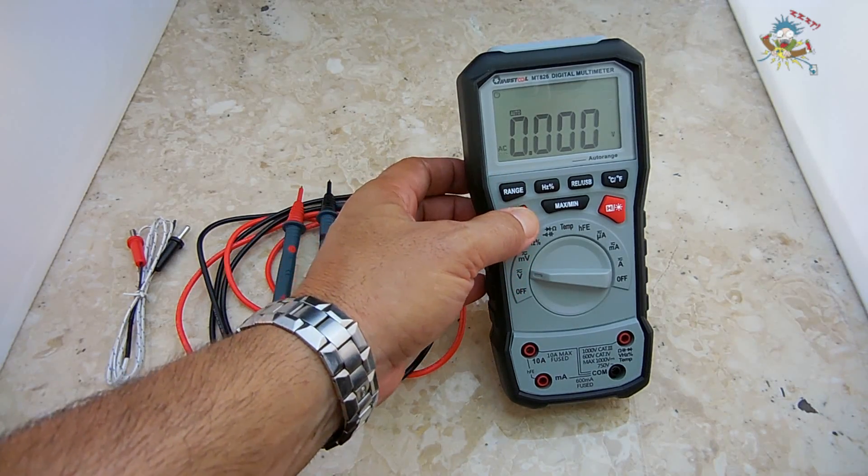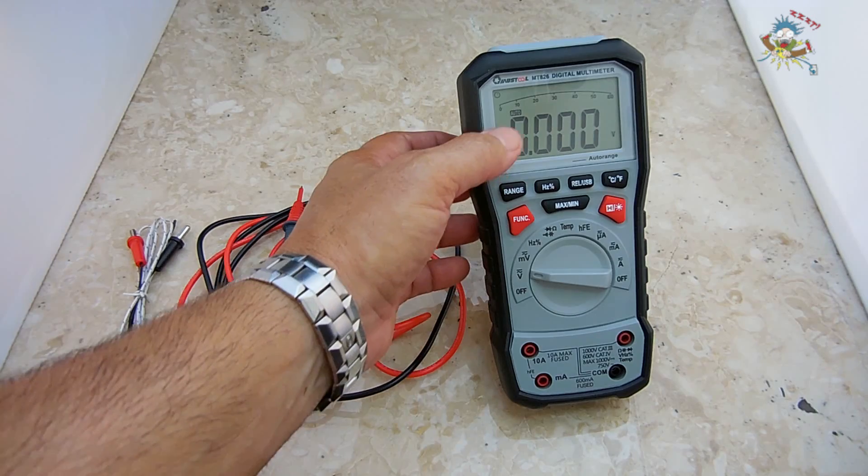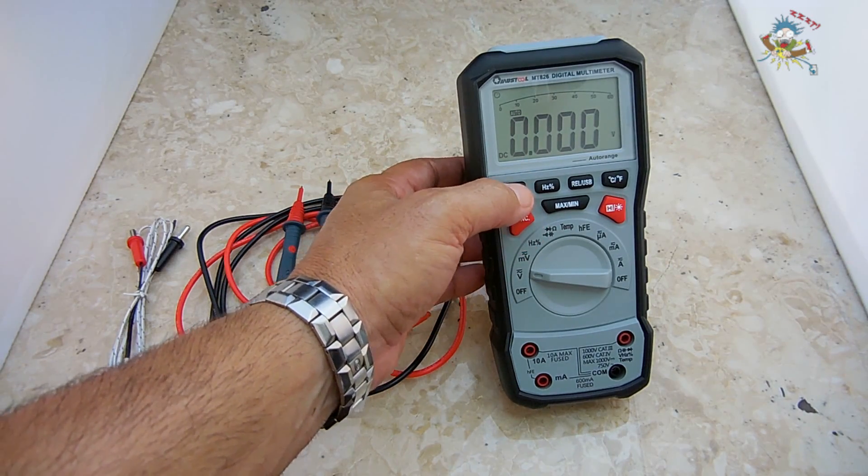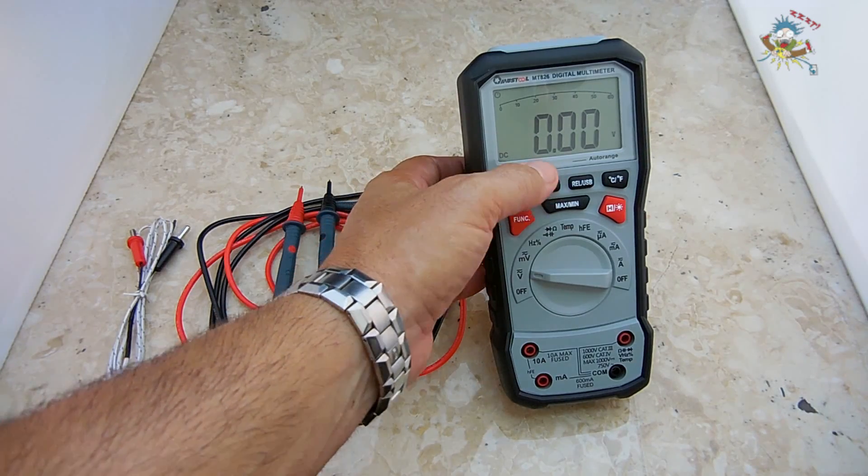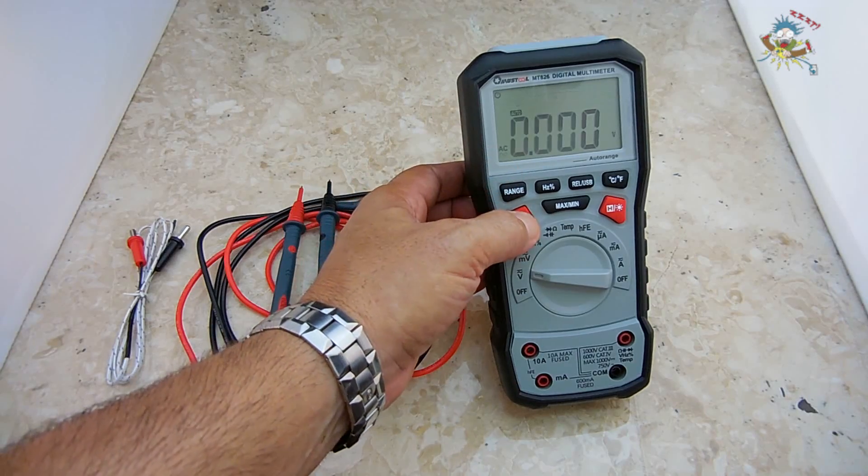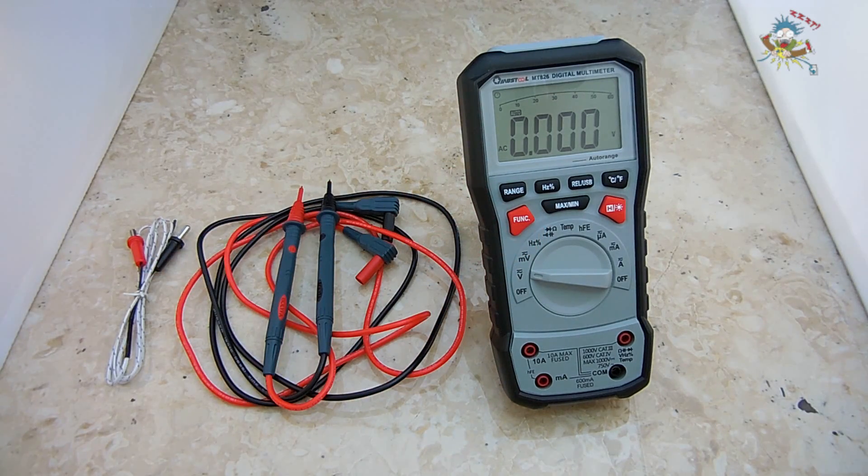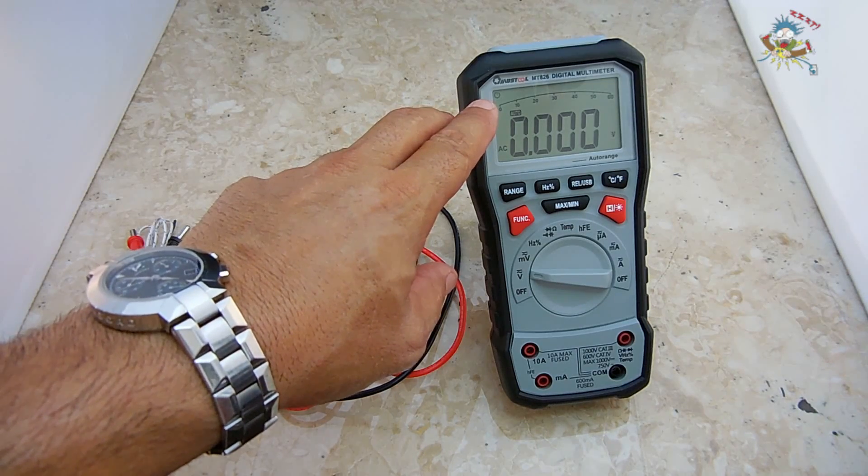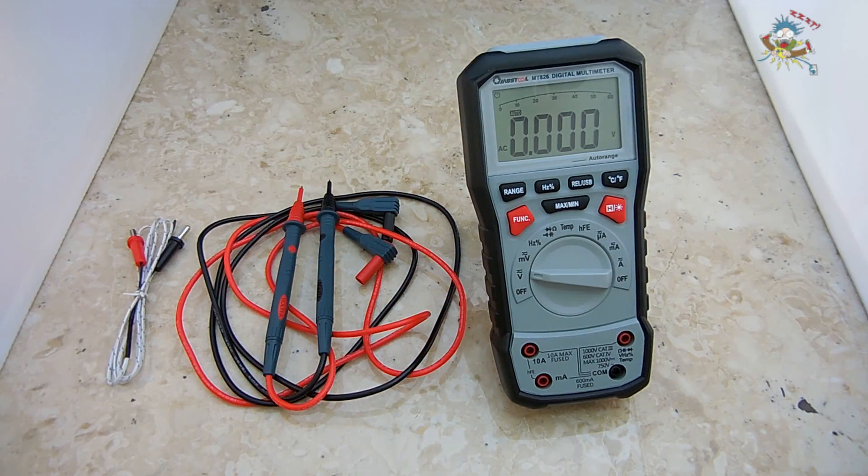You press the function button and now it's going to measure AC volts. You can go between auto ranging for DC to AC, or you can also choose manual. You can go through each range this way, or you can go back to auto again. The maximum AC voltage reading is 750 volts. This is a true RMS meter, and the maximum DC voltage reading is 1000 volts.